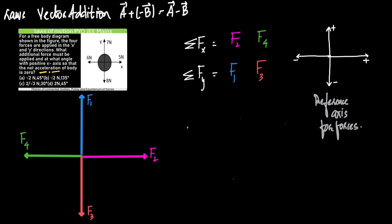Now coming to the question. I've taken four forces — instead of seven, five, eight, and six, I have labeled them as F1, F2, F3, and F4. I've chosen a reference axis to quantify the direction of these forces. F2 is acting towards right, therefore F2 would be taken as positive. F4 is acting towards left, and therefore F4 would be taken as negative.